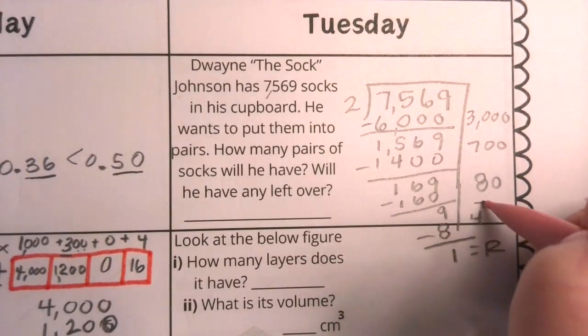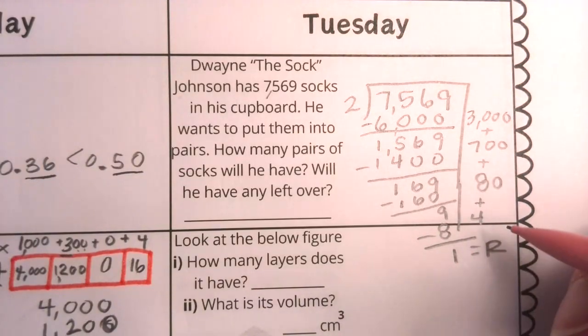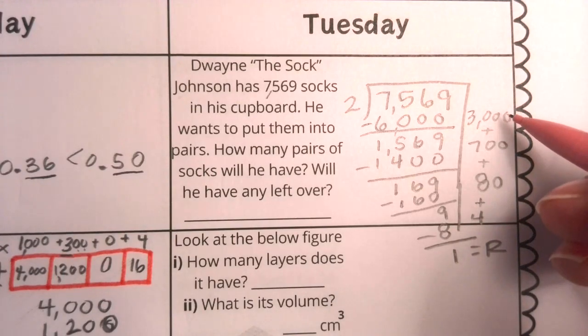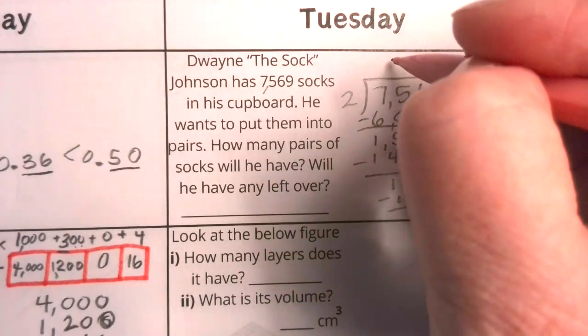So now what my task is, is to combine all of these groups to figure out how many pairs of socks we got. Well, really, we got 3,784 with a remainder of 1.